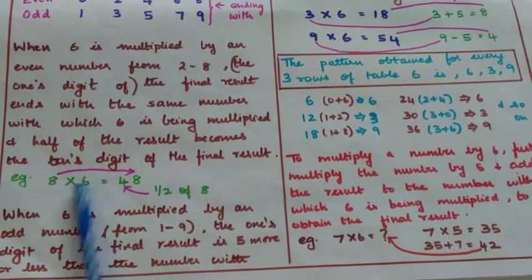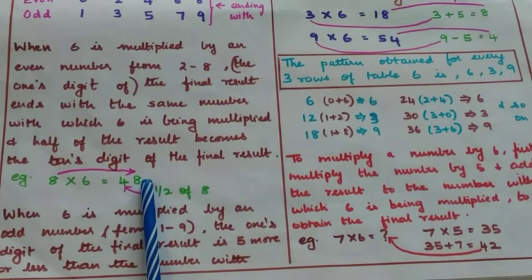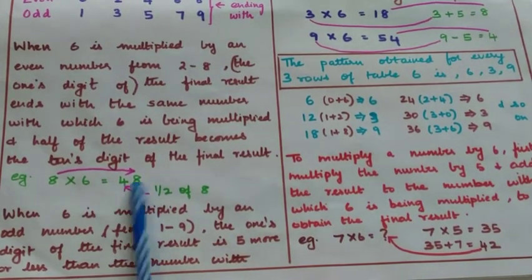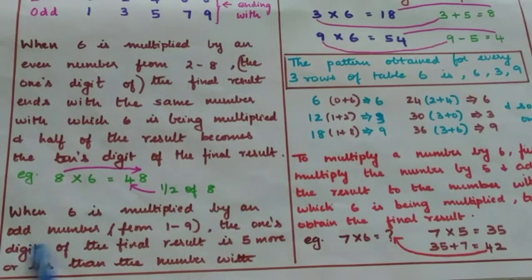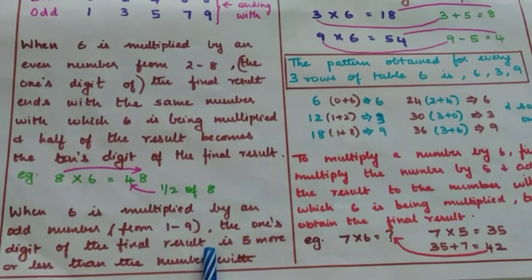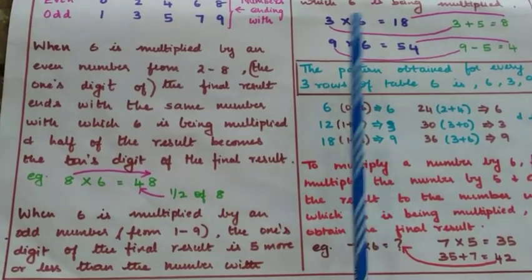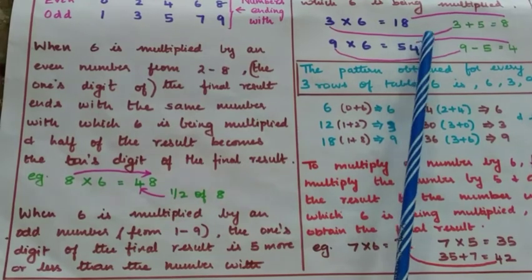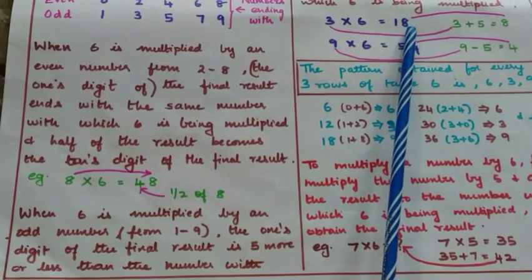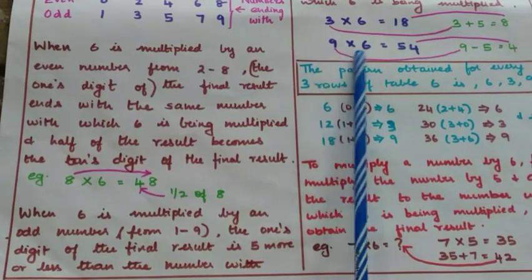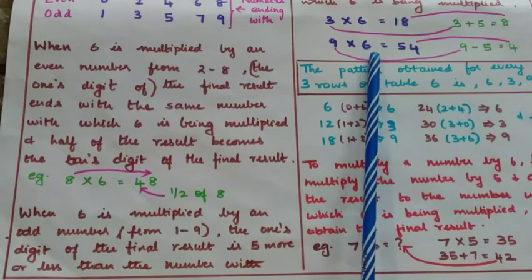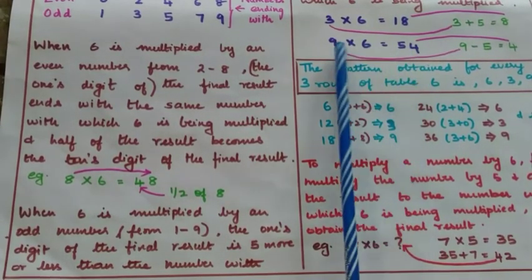So when you club both digits together, 8 into 6 gives 48. When 6 is multiplied by an odd number from 1 to 9, the ones digit of the final result is 5 more or less than the number being multiplied. For example, 3 into 6 is 18 — the ones digit 8 is 5 more than 3. And for 9 into 6, the ones digit of the result is 5 less than 9.